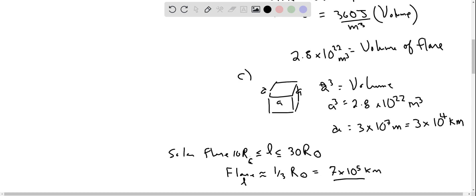And the radius of the sun is 7 times 10 to the 5th kilometers, and we want to divide that by 3. So that's roughly 2.3 times 10 to the 5th kilometers, which is about the same order of magnitude as this cube, all said and done with the approximations we made. And perhaps we can say that the cube is representing maybe a smaller scale flare.